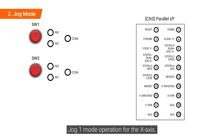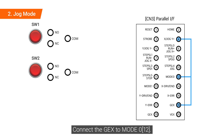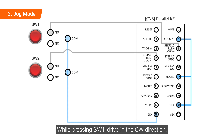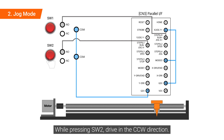For jog mode operation on the X axis: switch 1 and switch 2 are the CW and CCW jog drive buttons. Connect the axis to be driven from the parallel I-F to GEX, and connect GEX to mode 0. While pressing switch 1, drive in the CW direction. While pressing switch 2, drive in the CCW direction.